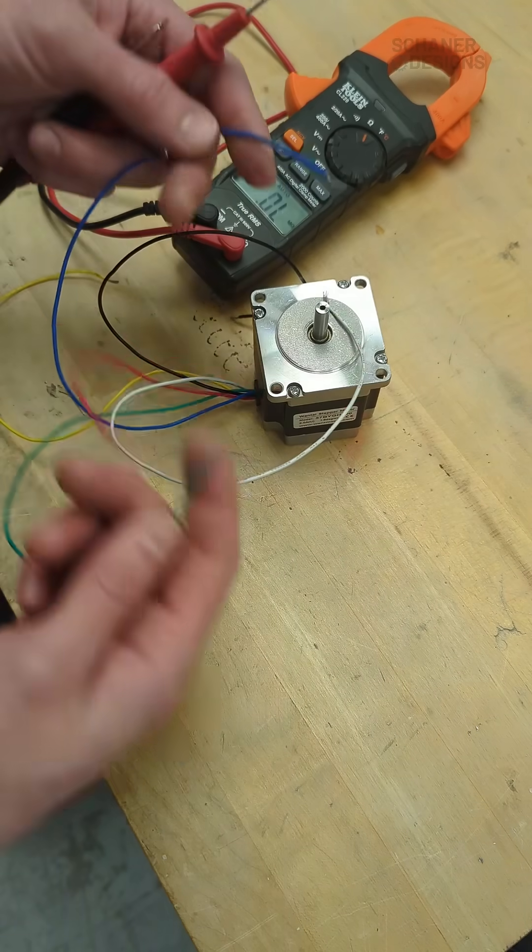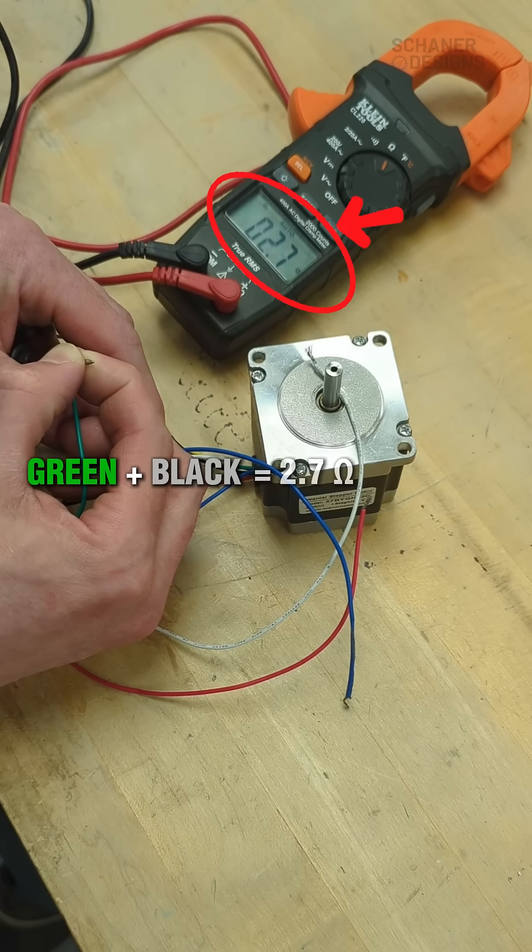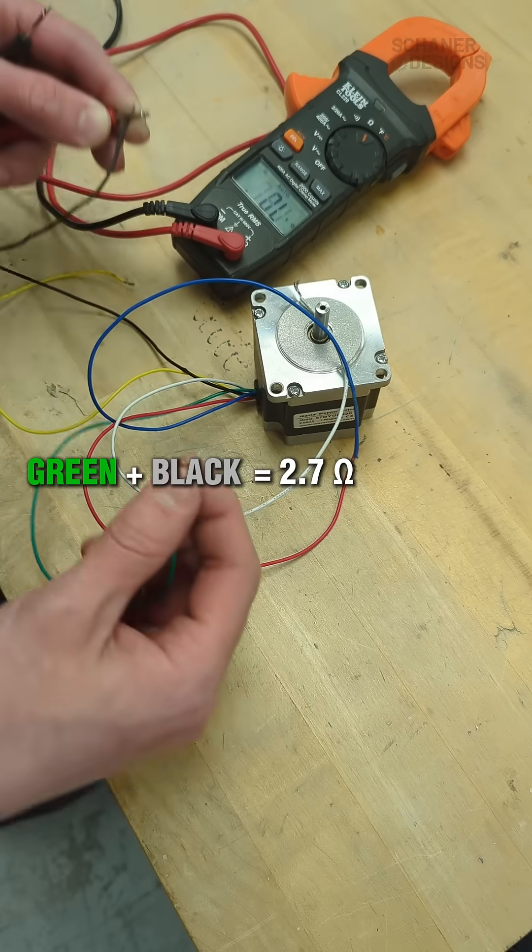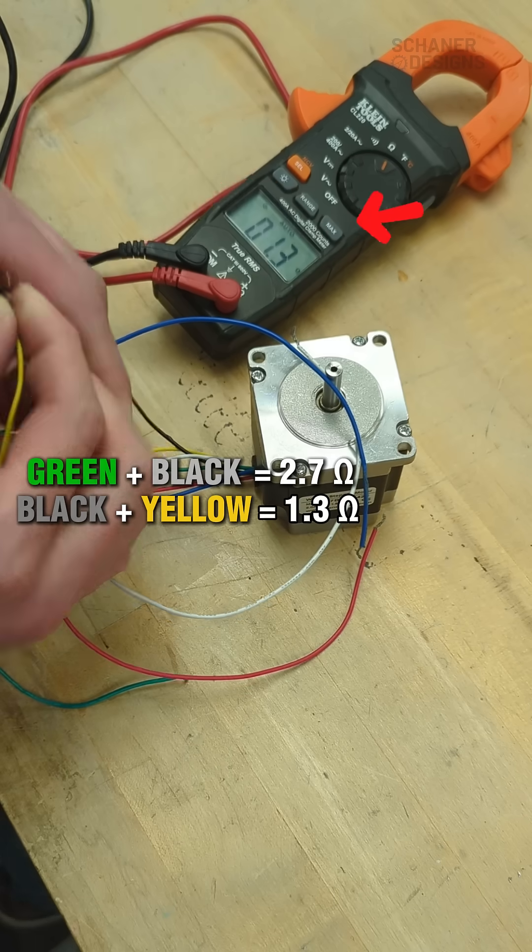So let's do the same thing again with green and black so we should be getting about the same thing about 2.7 ohms and then if we go black to yellow we get about half that.